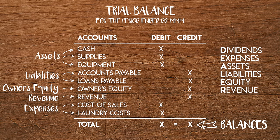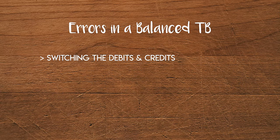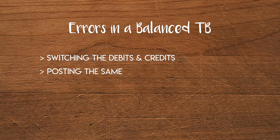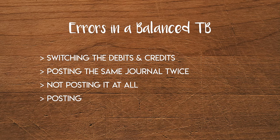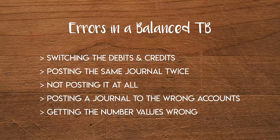However, debit and credit totals being equal doesn't mean our trial balance is error-free. We could have switched the debits and credits in a journal and got them the wrong way round, or we could have posted the same journal twice or not even posted it at all. We could have posted the journal to the wrong accounts entirely, or posted a balanced journal to the correct accounts but with wrong numbers because we messed up our workings. So by no means does a balanced trial balance mean that it's correct, but it's certainly a good start.